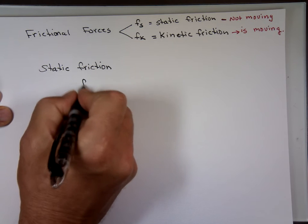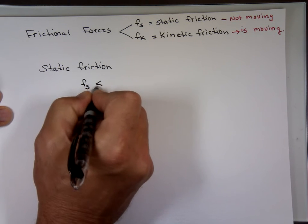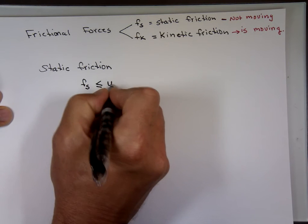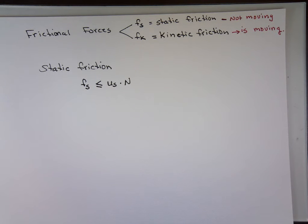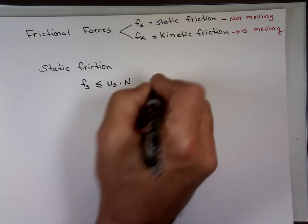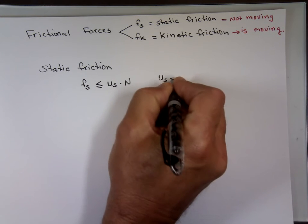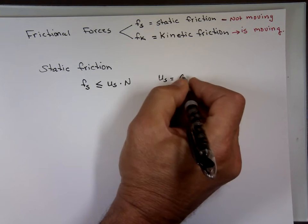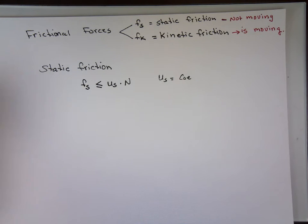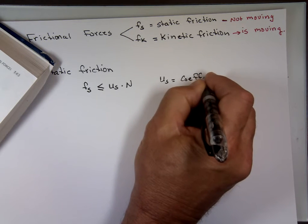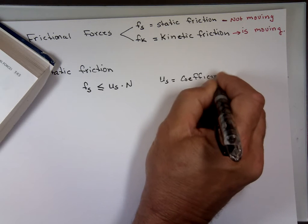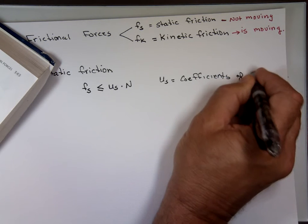The value of static friction is always less than or equal to mu_s times N. And what's mu_s? That's the coefficient of static friction. I'm going to give you a chart in a minute to give you an idea what these numbers are - coefficient of friction, static friction.